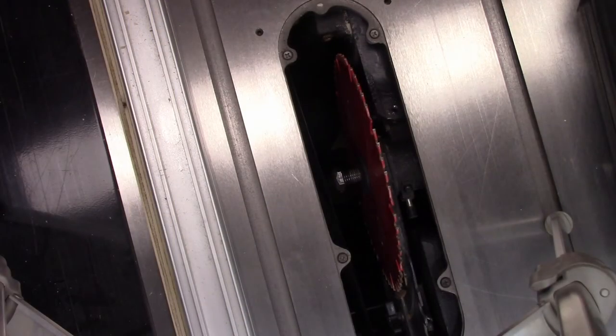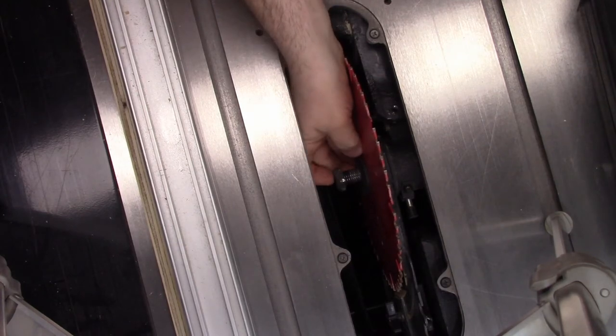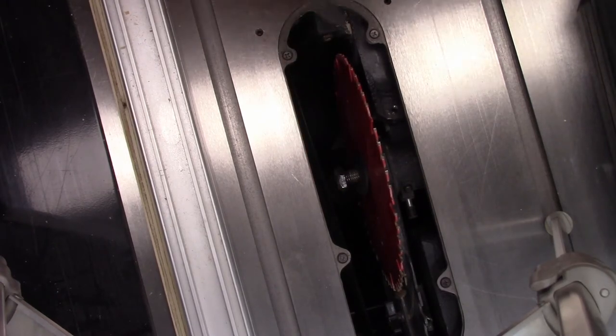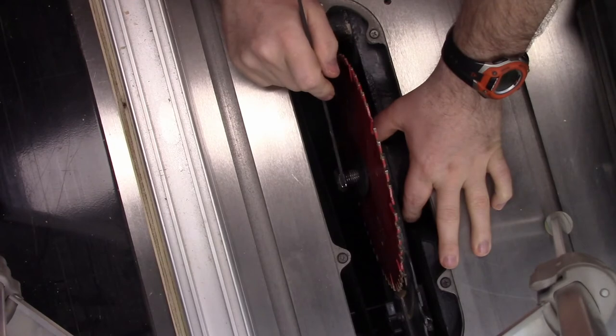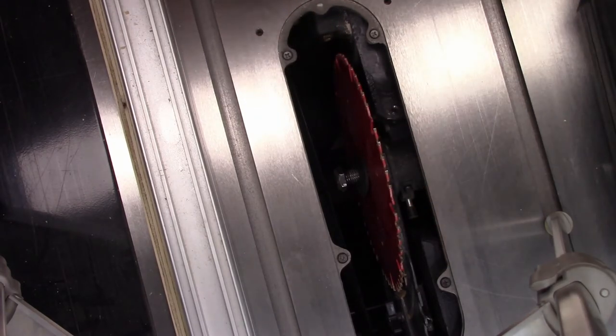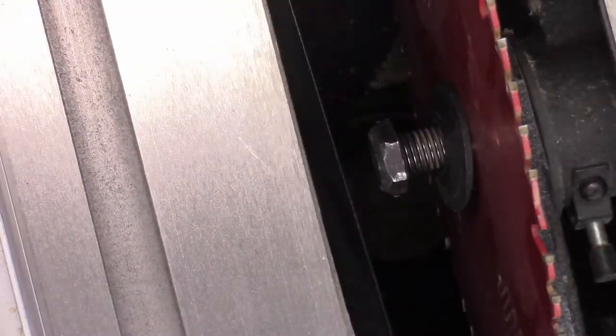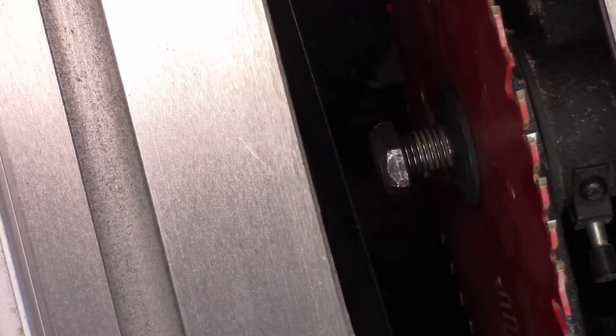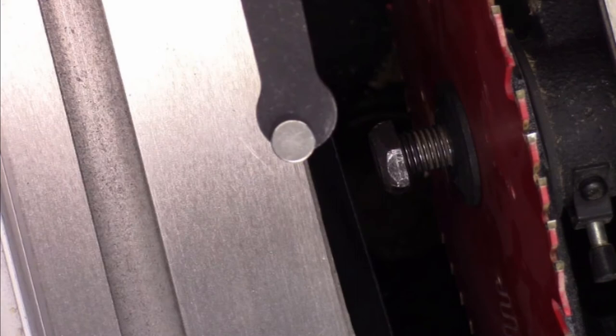Alright, so this tip is about the bolt that holds the blade onto the arbor. Now I need to remove this so that I can throw in a dado stack to work on my project. And I'm sure everybody at some point has dropped that bolt down into the dust collection. So I take the wrench that they provided and attached to it I'll put a neodymium magnet just simply on the end of it.